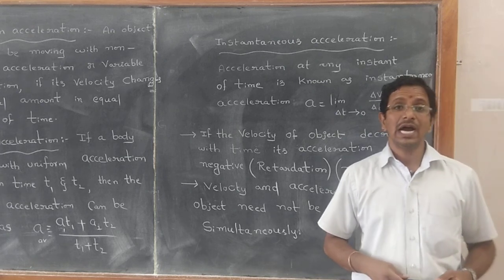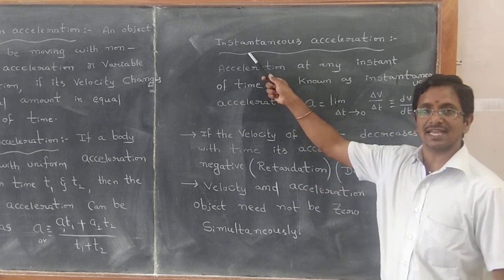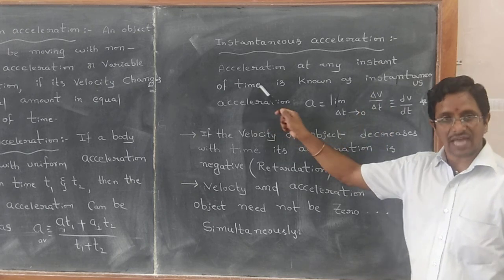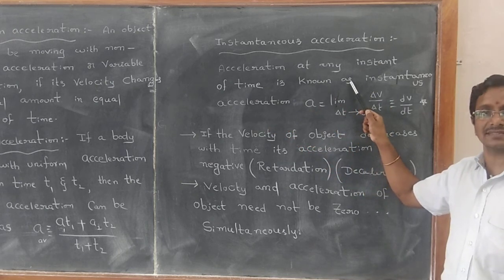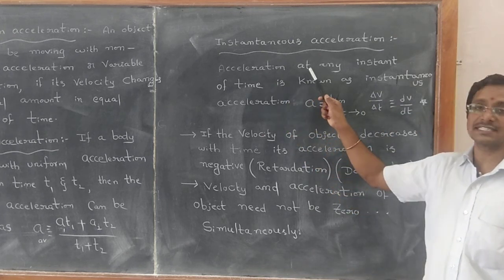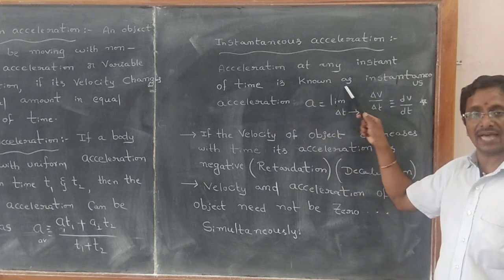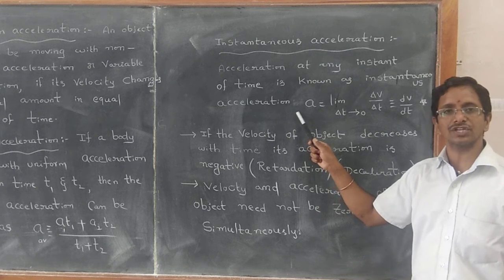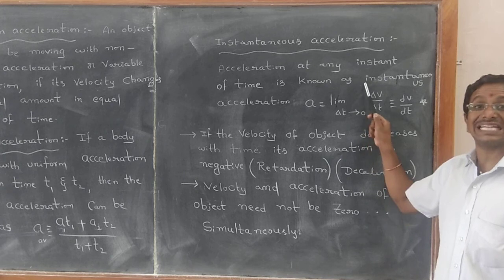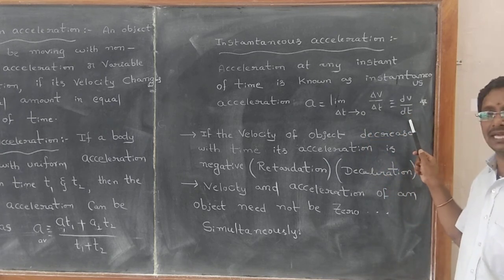Now, our topic is Instantaneous Acceleration. The acceleration at any instant of time is known as instantaneous acceleration. Therefore, a equals limit as Δt tends to 0 of Δv by Δt, which equals dv by dt. This is important. Please note it down.